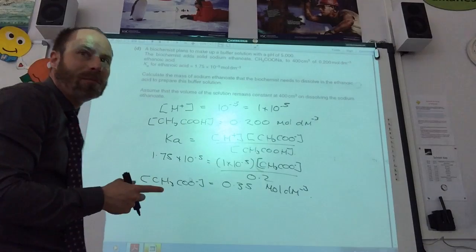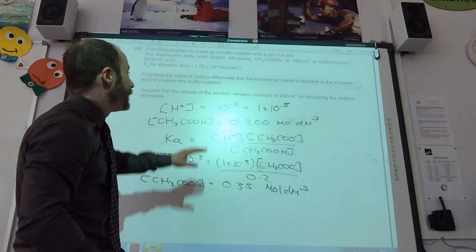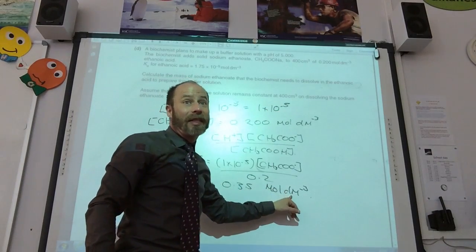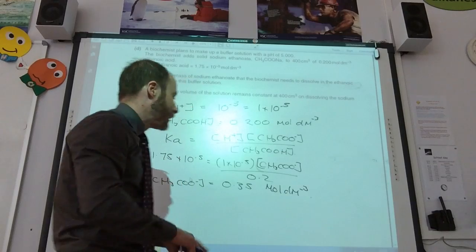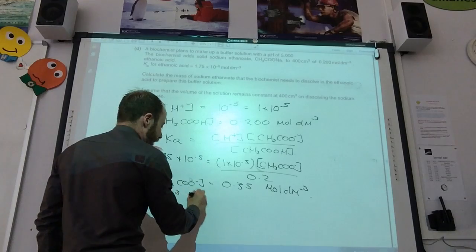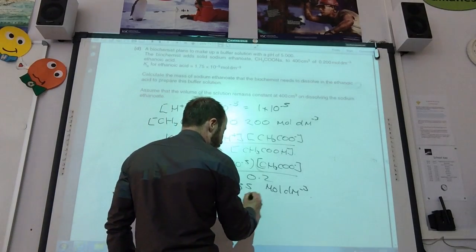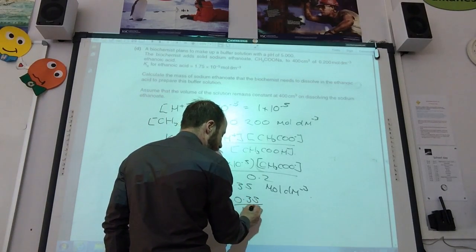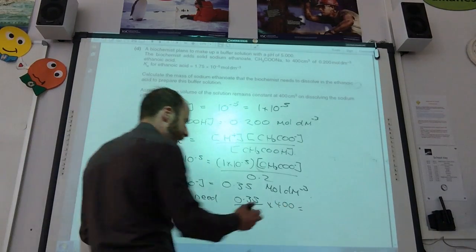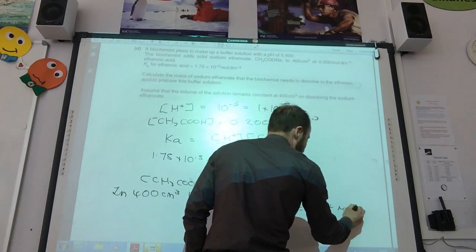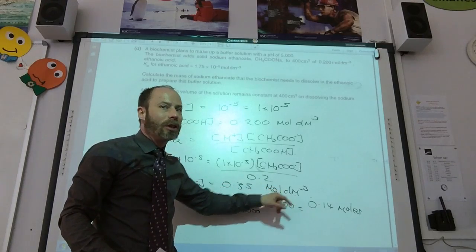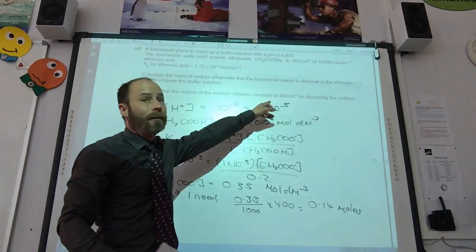That's in moles per decimetre cubed. But the volume they want me to use is 400 cm³. That's the number of moles I need in 1,000 cm³. So in 400 cm³, I need 0.35 divided by 1,000 times 400. I only want to know how much is in 400.